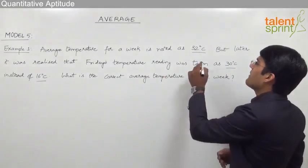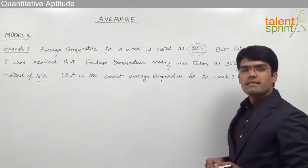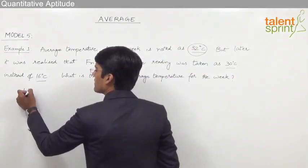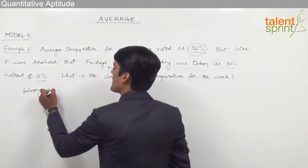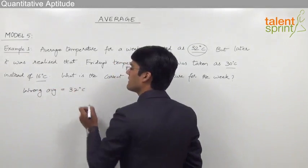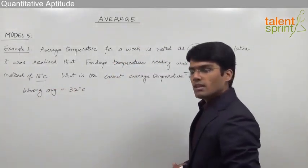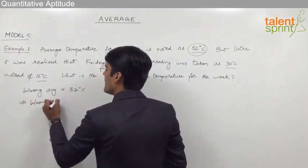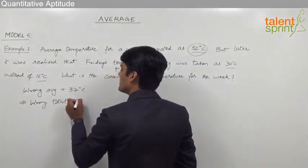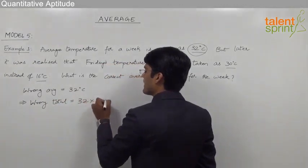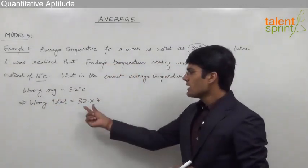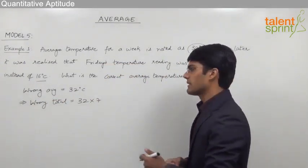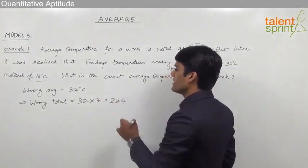The average which has been calculated, that is 32 degrees centigrade, is the wrong average. The wrong total of all the values should be equal to 32 into 7, as there are 7 days in a week. So 32 into 7 gives the total of all the temperatures for that week, which equals 224.